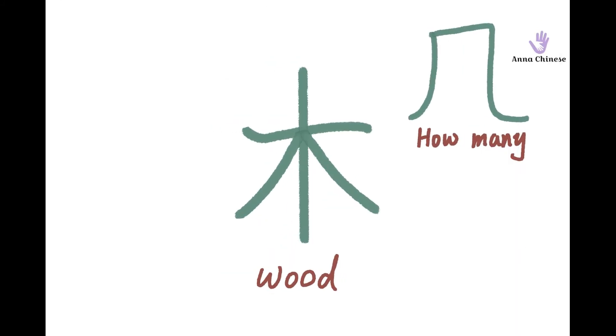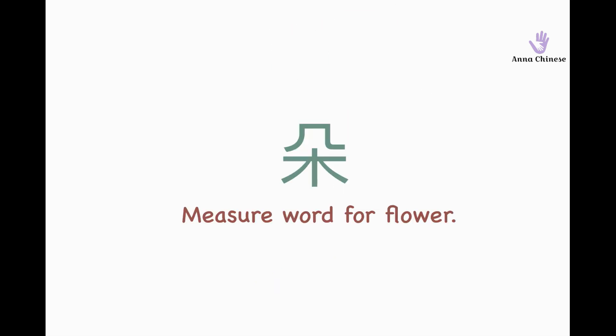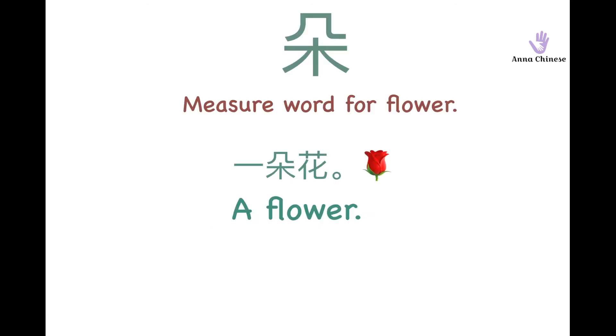几, how many? If we put the 木 above 木, we get a new word, that is 朵. 朵 is a measure word for flowers. 一朵花, a flower. 花, flower.